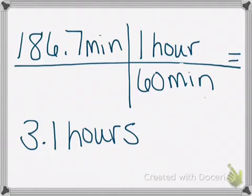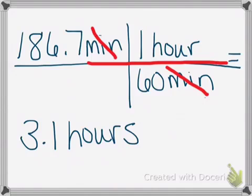So here's how you do that. You have to convert the minutes into hours. I use the T method where I put what I have on top, 186.7 minutes. And then over here on the right, you see that 60 minutes is on the bottom to one hour on the top. That way, minutes cancels out. And you take 186.7, divide by 60. When you do that, your answer is 3.1 hours.